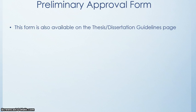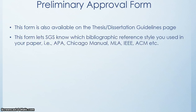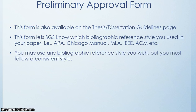The preliminary approval form is also available on the thesis and dissertation guideline page. This form lets the School of Graduate Studies know which bibliographic reference style you used in your paper — APA, Chicago Manual, MLA, IEEE, ACM, or a variety of journal styles.